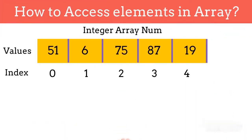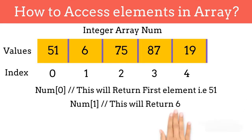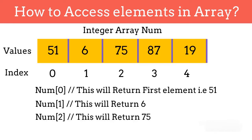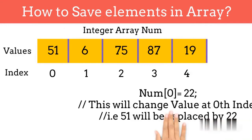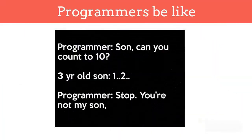The index of an array starts from 0. If you want to access the element at the first position, you will use num[0], which will return the first element in the array. If you want to access the second element, you will use num[1], and so on. Similarly, if you want to save something in an array, you can use indexes. For saving something at the 0th position, you can use num[0] = any number that you want. You can save values at other indexes as well. The index of an array starts from 0.